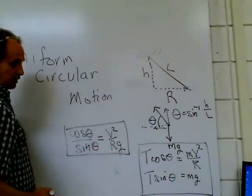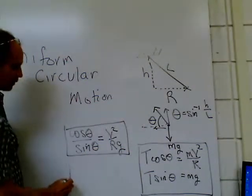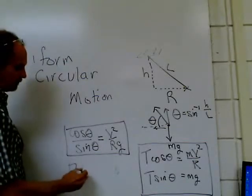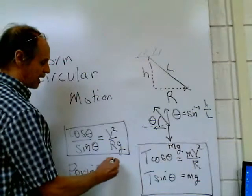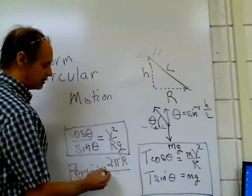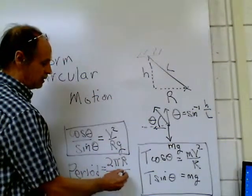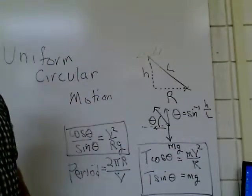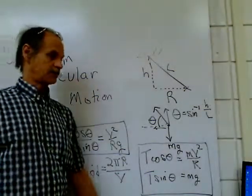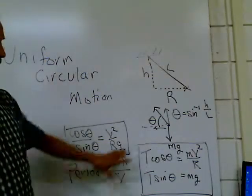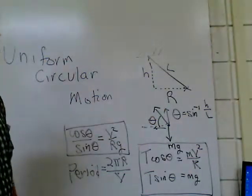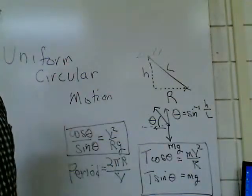So you compute the velocity of the airplane. You then compute the period by taking two pi times the radius divided by the velocity, and compare this period computed using Newton's second law with the measured period.